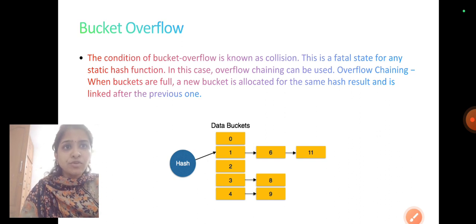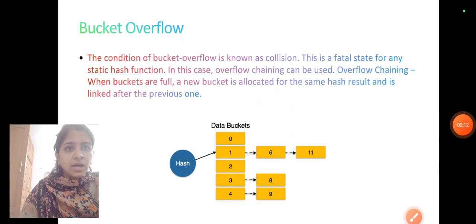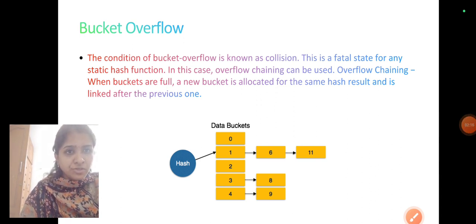Whenever an overflow of the bucket has arrived, overflow chaining is used. Here a new bucket called 6 has been introduced. And whenever the 6 got filled, another bucket called 11 has linked with it. Next comes data bucket 3. Whenever the bucket overflows, overflow chaining can be used. A new bucket called 8 has been introduced here.